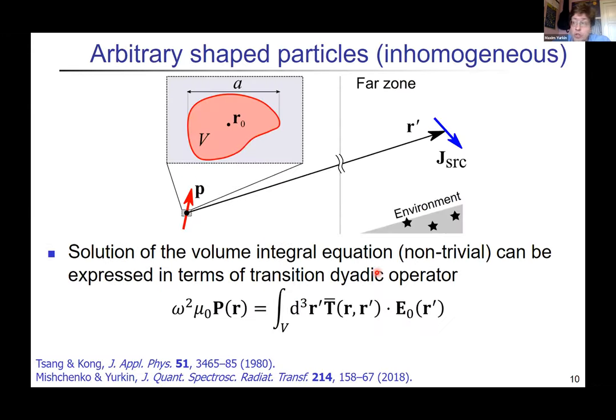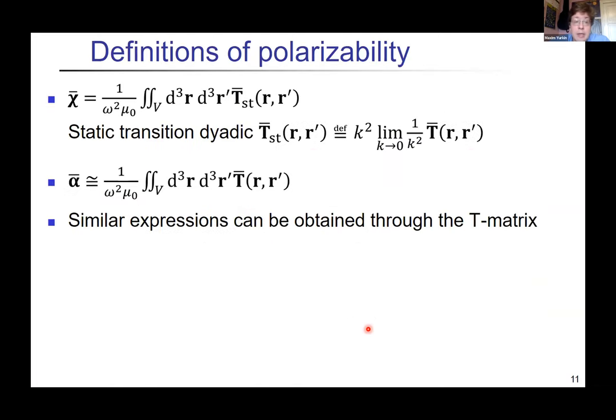The next step is to bring it all to arbitrary shape particles. It can be solved but you need to make some effort for a particular case. Here we write it down in terms of transition dyadic operator which we assume to be known. Once we do it we can define anything—for example, static polarizability is given through the static operator and dynamic polarizability through the standard dynamic solution at some fixed frequency. Again you have asymptotic equivalence, so that's one possible definition. If you prefer T-matrix in spherical wave function basis, you can also do it.